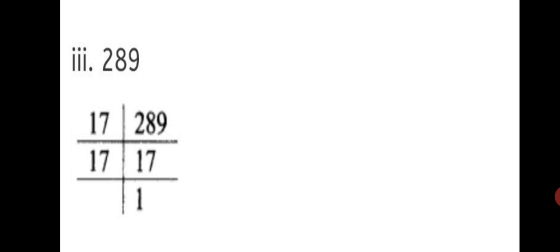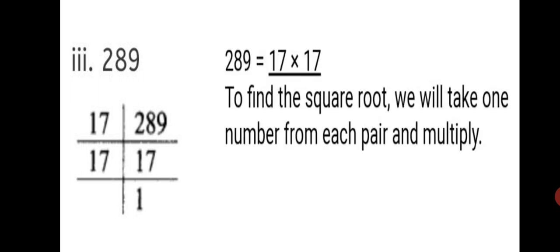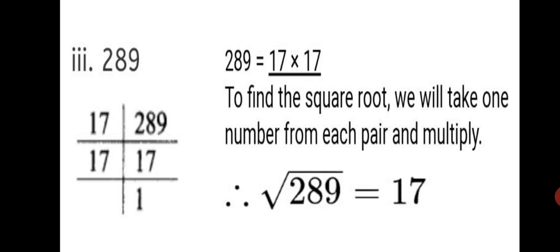Third sum: find the square root of 289. We first find the prime factors. 17 into 17 equals 289, so the prime factors are 17 and 17 — we get only one pair. To find the square root, we take one number from the pair, which is 17 itself. Therefore, the square root of 289 equals 17. Since there is no other pair, we need not multiply 17 with anything else.